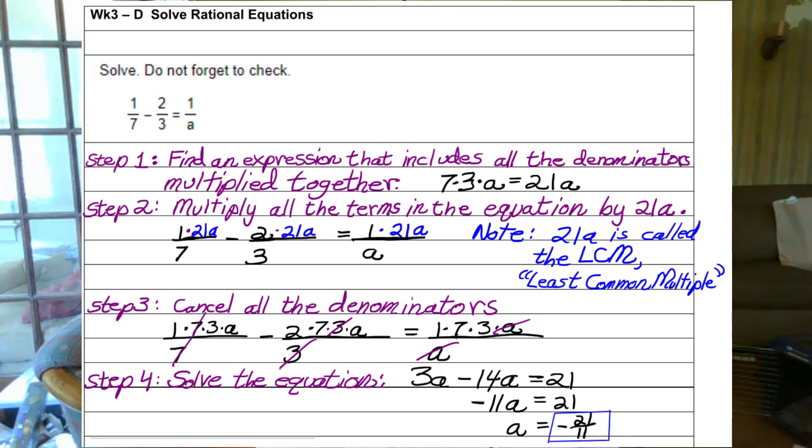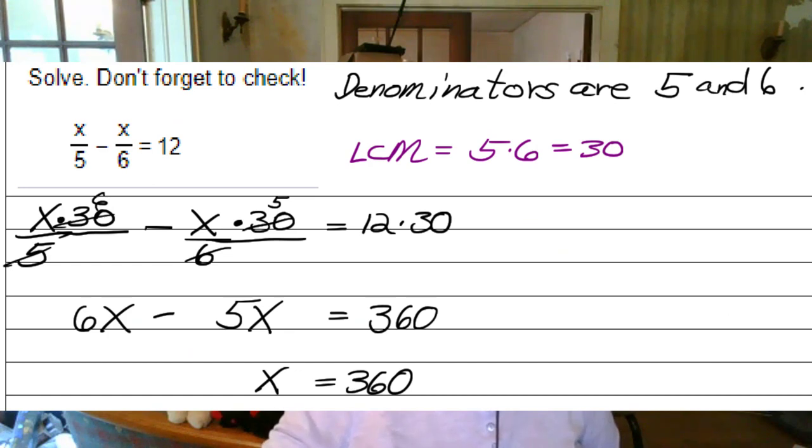We took every term, and we multiplied it by an expression that contains 7 times 3 times a, which is 21a, although you can really just leave it 7 times 3 times a. Makes it easier. Here's another rational equation. Remember, rational comes from the Latin word ratio, which means fraction.